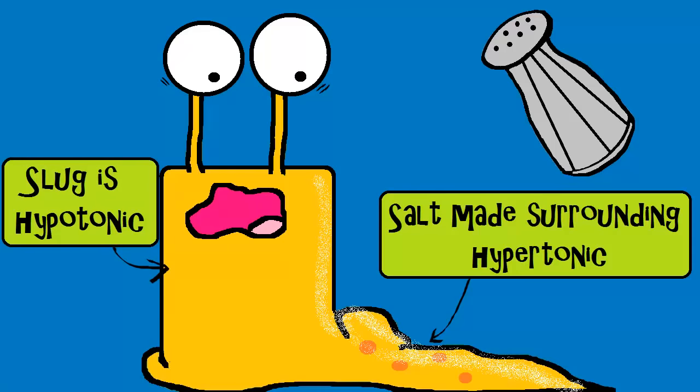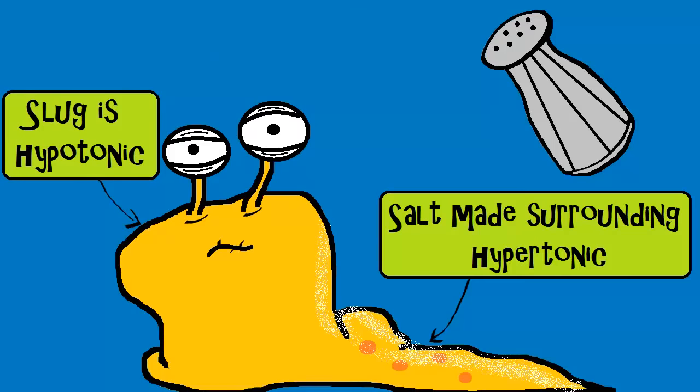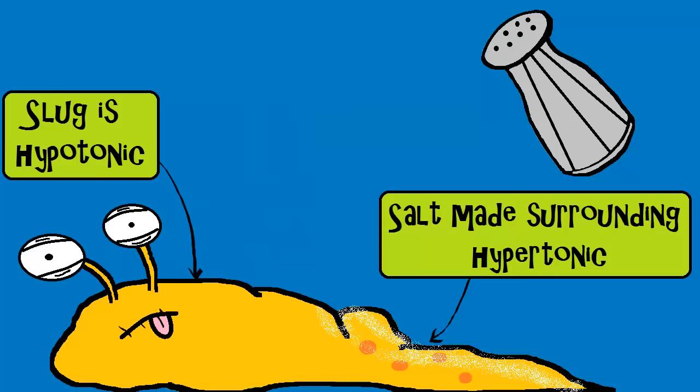The slug is hypotonic to the salt. Remember, the water will travel to the area of higher solute concentration, to the hypertonic side, so the water that was in the slug travels out of the slug. And the slug dehydrates.